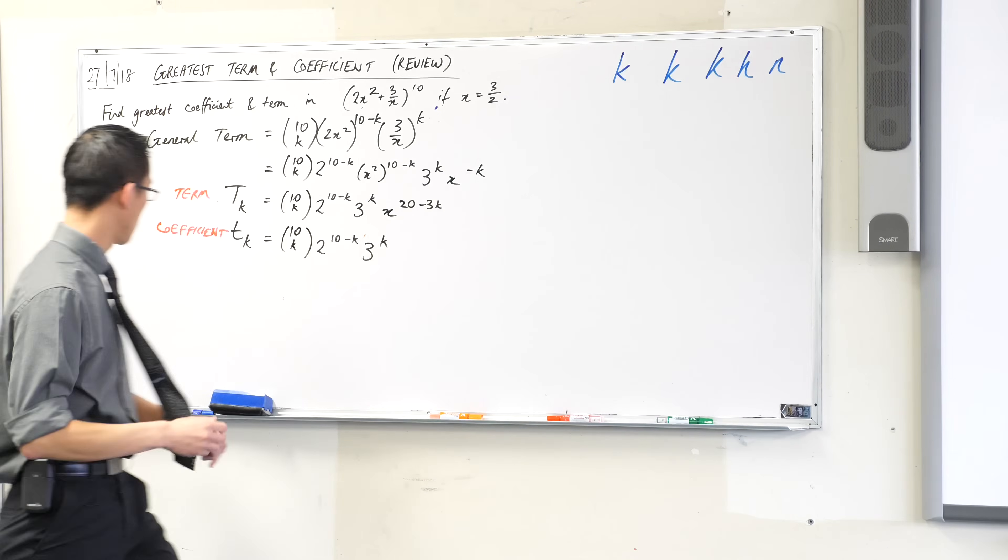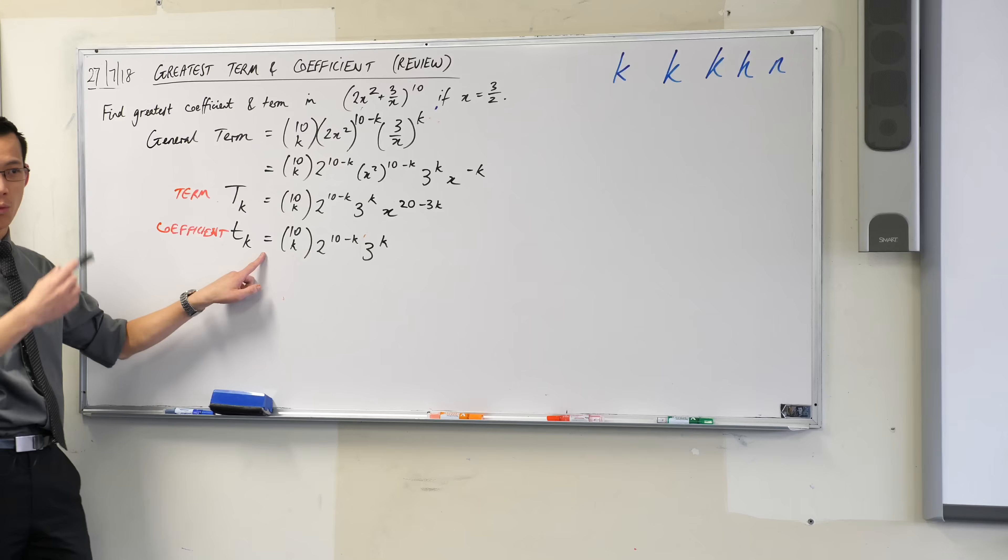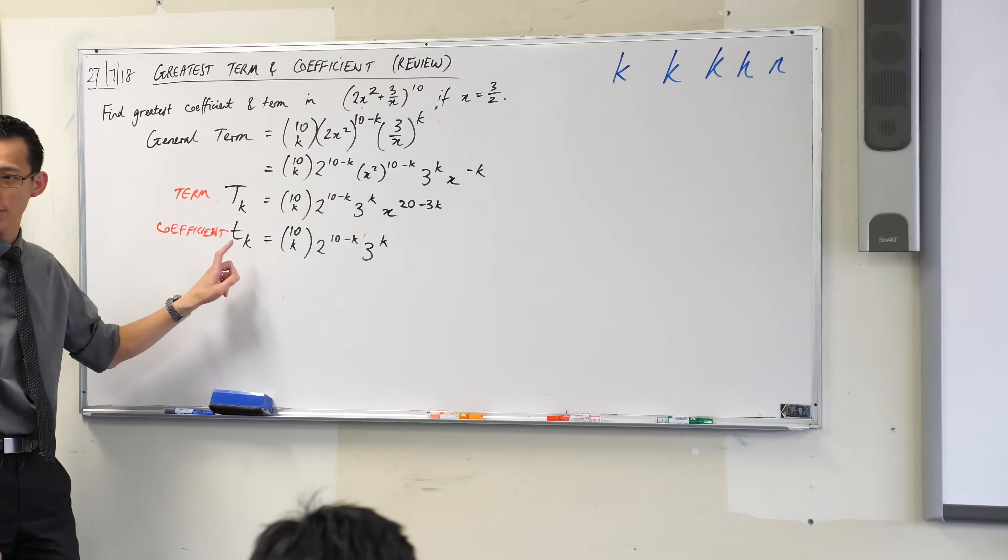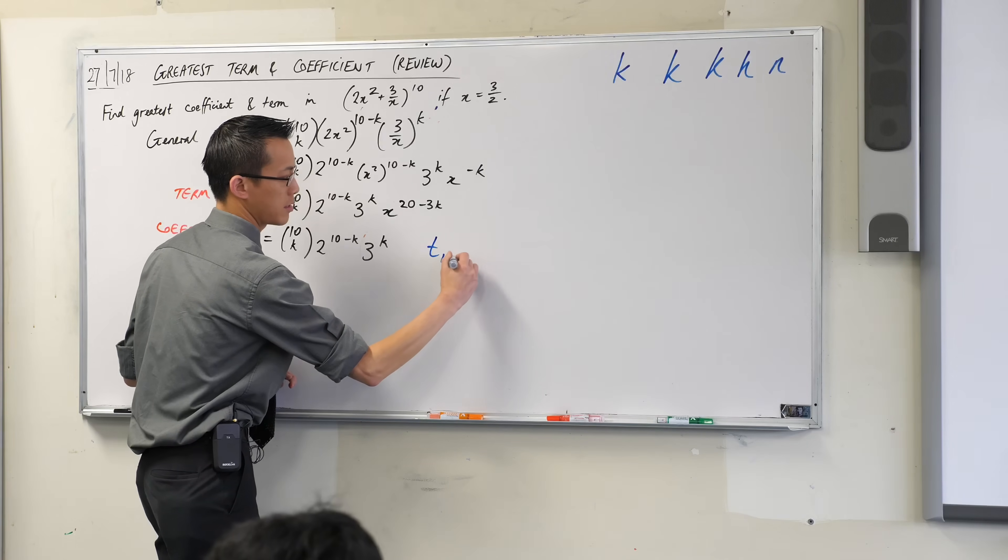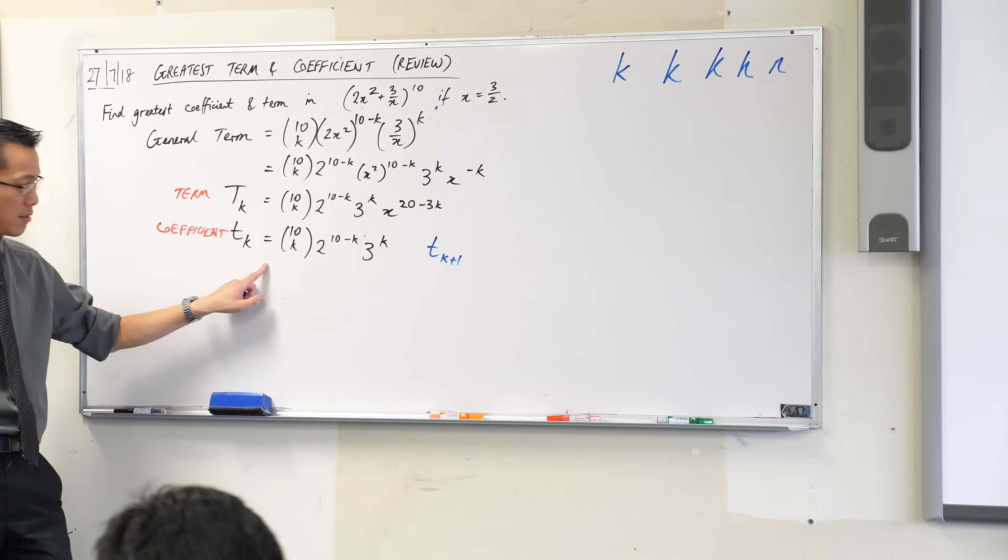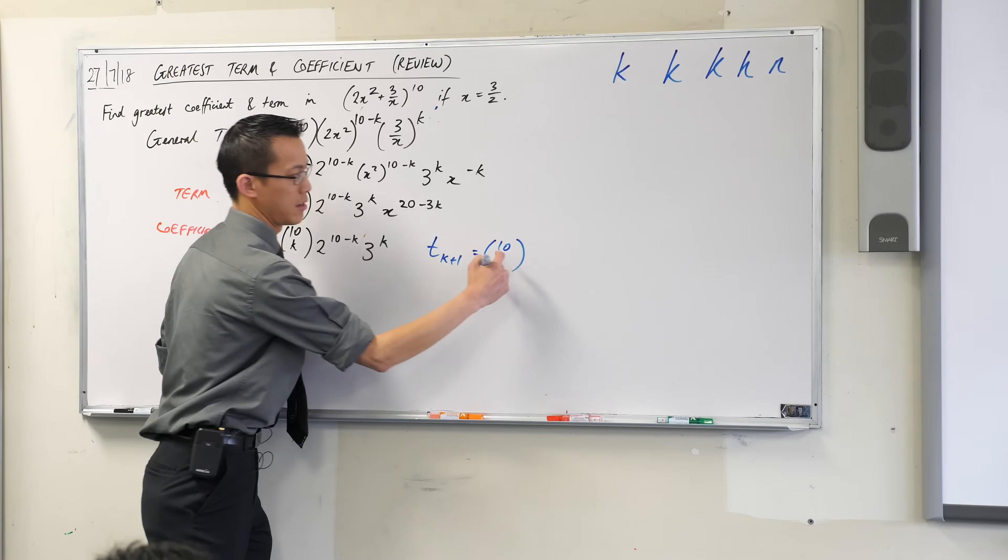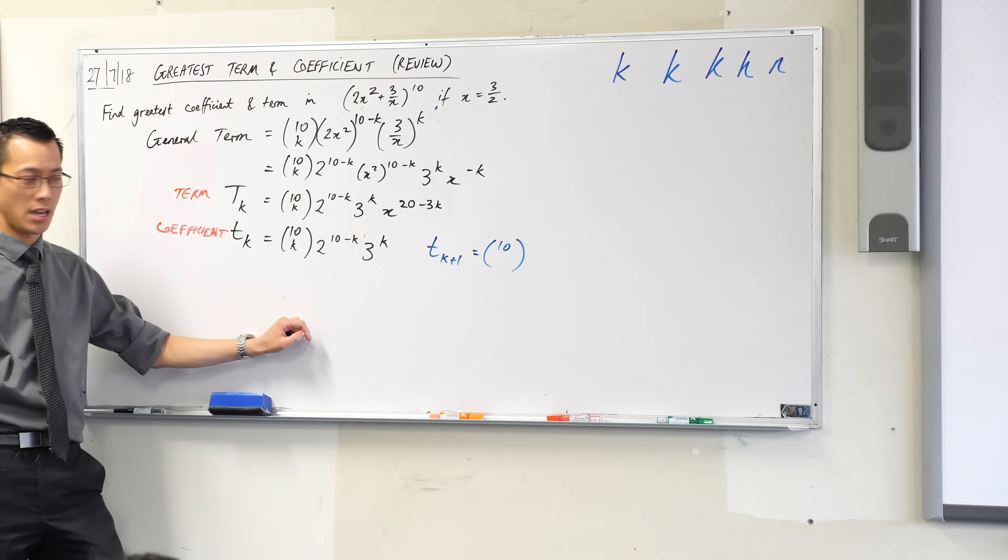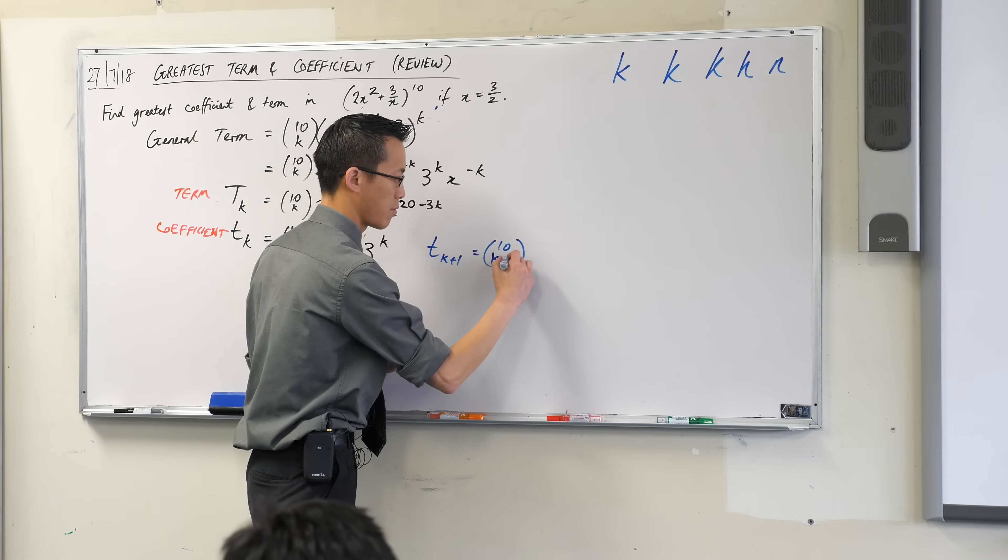If I want the greatest coefficient, I want to compare this guy with the next guy, t of k plus 1. So maybe I'll use a different colour for this. So t of k plus 1 is the coefficient one after this one, it's the next one along in the line. So what happens is instead of having 10 choose k, I'm going to have 10 choose k plus 1. It's the next one along.